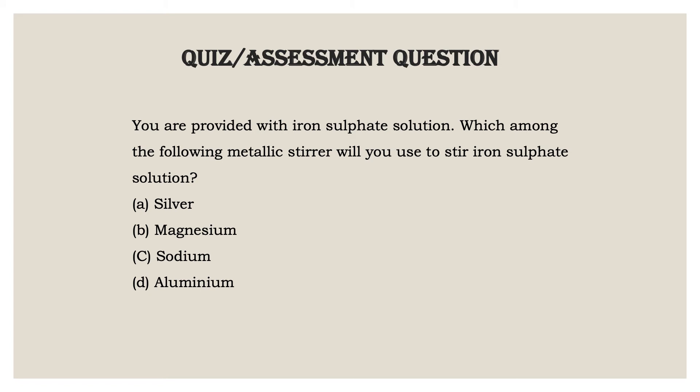One such question our viewers can see on the screen. You are provided with iron sulphate solution — which among the following metallic stirrer or spoon will you use to stir iron sulphate solution? This is a multiple choice question with choices: A — silver, B — magnesium, C — sodium, D — aluminium. Children can easily explore and, with the help of this toy, determine which metal will replace what and answer this question.